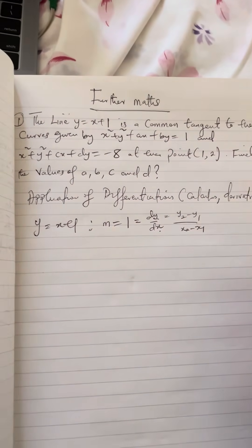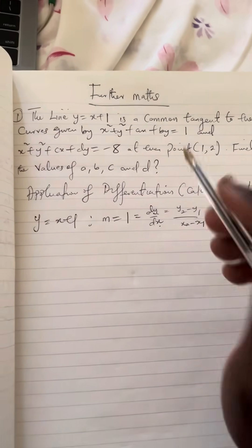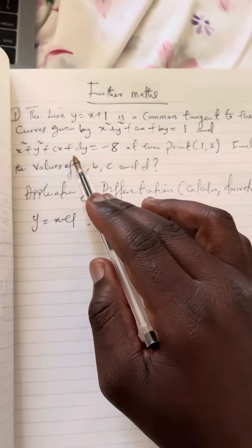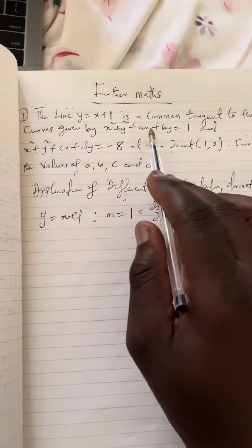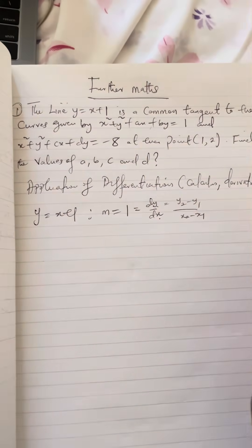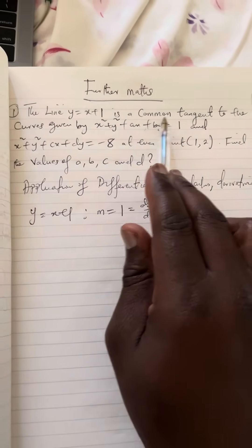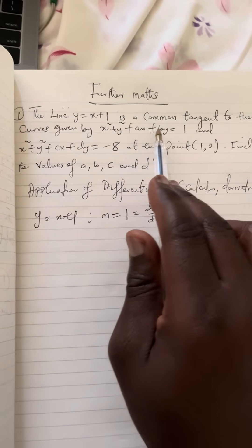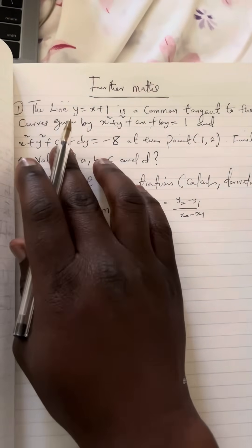Another thing you have to know is that the line is said to be a common tangent to this curve. There are two curves. We are going to solve for curve one first, then come back to curve two, because the question is asking us to find a, b, c, and d. So let's deal with curve one first. The line y = x + 1 is a common tangent to the curve x² + y² + ax + by = 1.